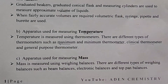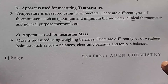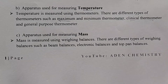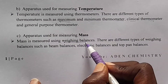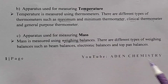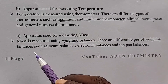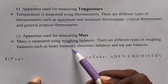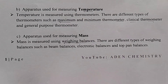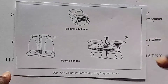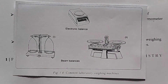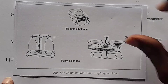Next, we have apparatus used for measuring mass. Mass is measured using weighing balances. There are different types of weighing balances, such as the beam balance, the electronic balance, and the top pan balance. Here we have the electronic balance and the beam balance.